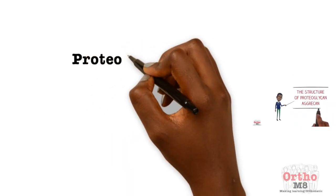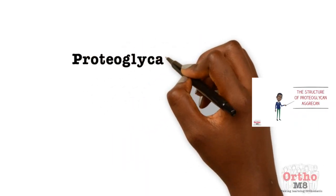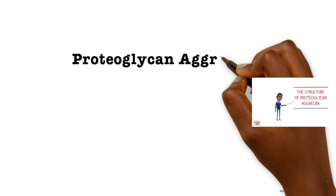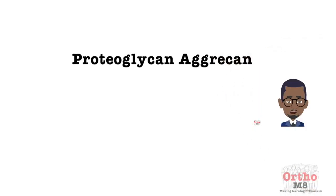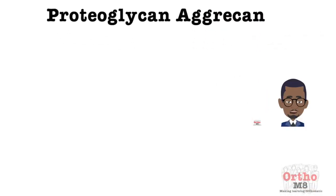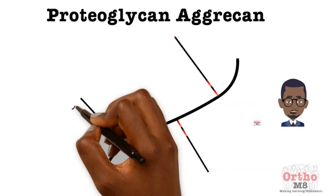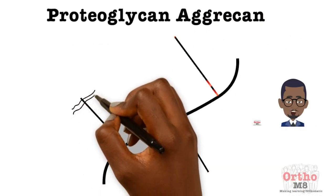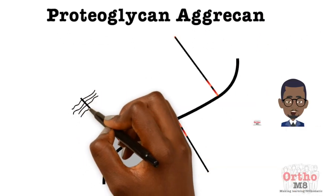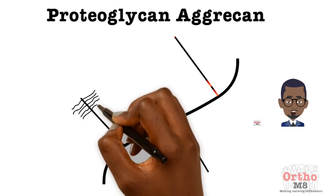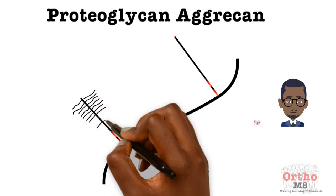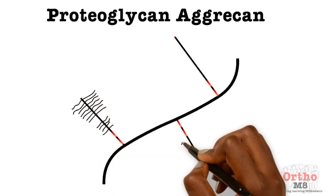Today's topic is the structure of proteoglycans. The molecule provides cartilage with its osmotic properties, which gives articular cartilage its ability to resist compressive loads.